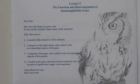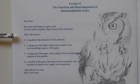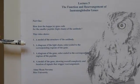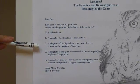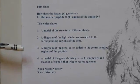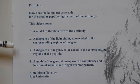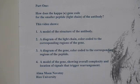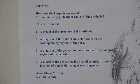And so we're going to be using models of the structure of the antibody, photos of that, diagrams of the light chain, color-coded to correspond to the gene. And we're going to go through that and give you an idea of what part of the genes code for what part of the protein.